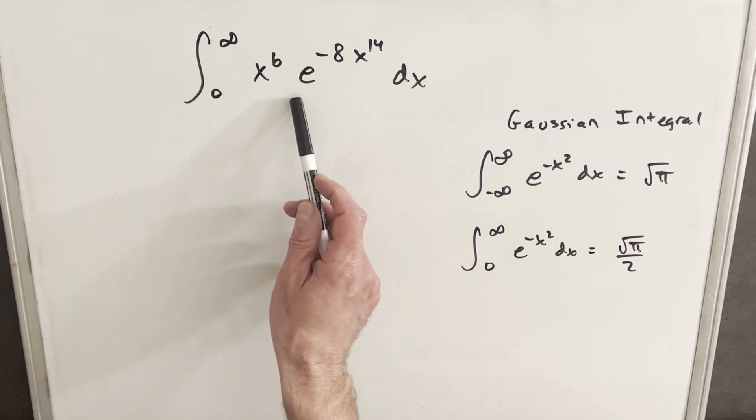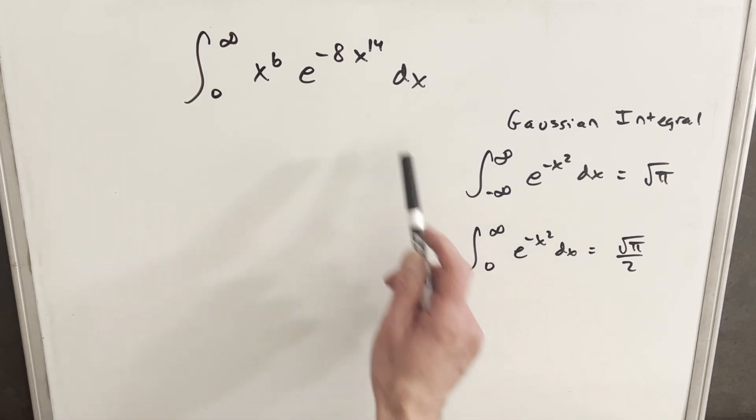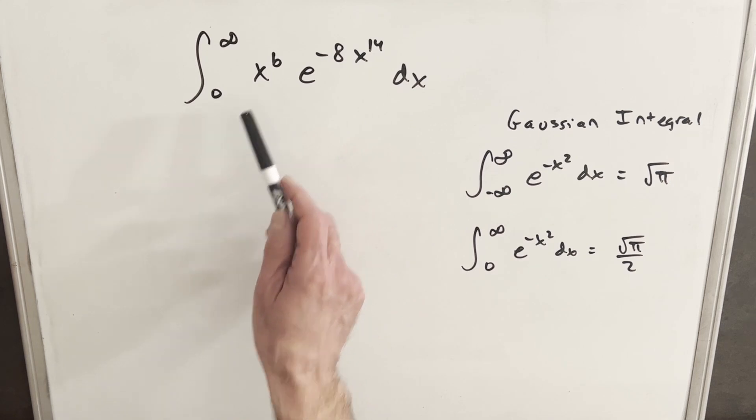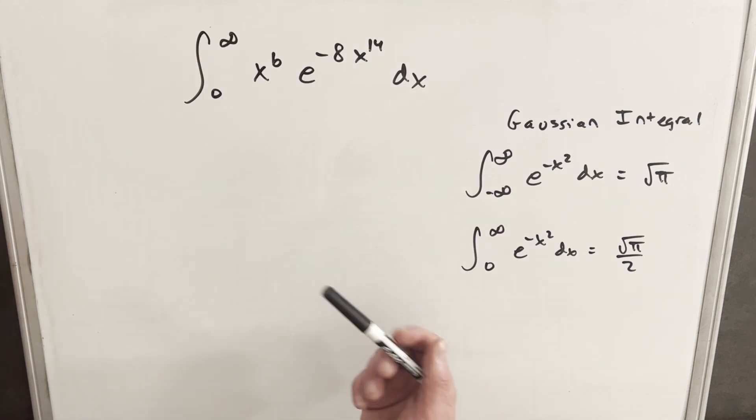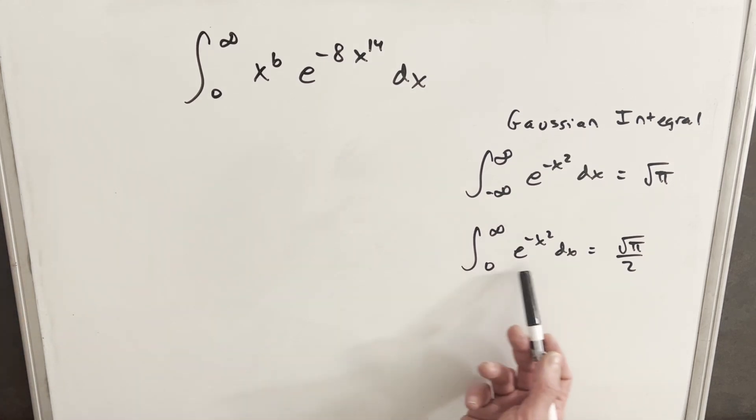And then the challenge is with what we actually have, well we don't have a square power, we have x to the 14th, and we got this x to the 6th out front. So let's see if we can simplify this and manipulate it somehow so we can use this formula.